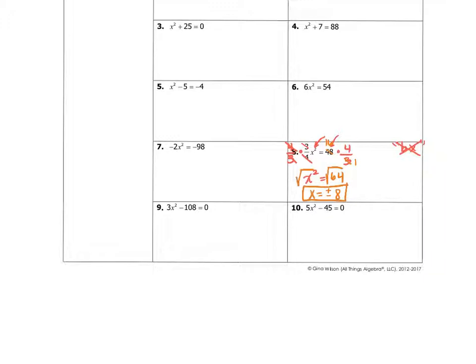For number 9, you could factor if you wanted to, take out the 3, and that gets you x² - 36. That's equal to 0. And we could do this one by factoring.